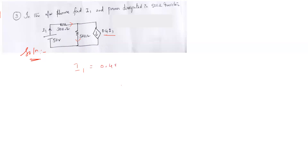So I1 is equal to 0.4 I1 plus the current going to the other branch, which I will call Ia. So the total current I1 equals 0.4 I1 plus Ia, which gives me Ia equal to 0.6 I1. So the current flowing in the 500-ohm resistor is 0.6 I1.